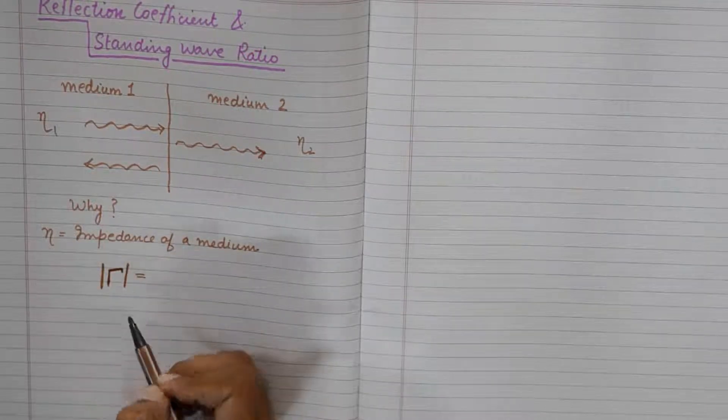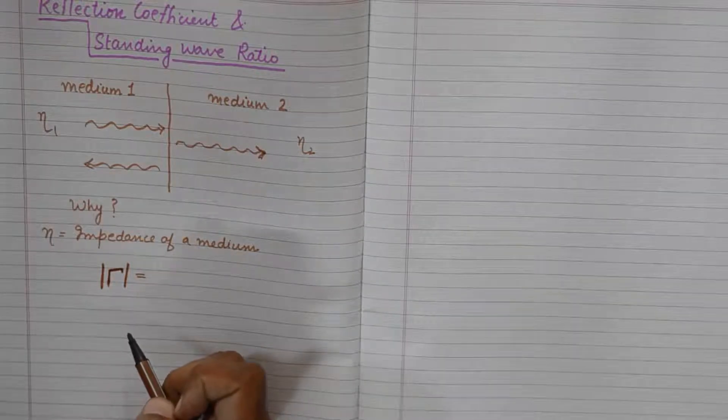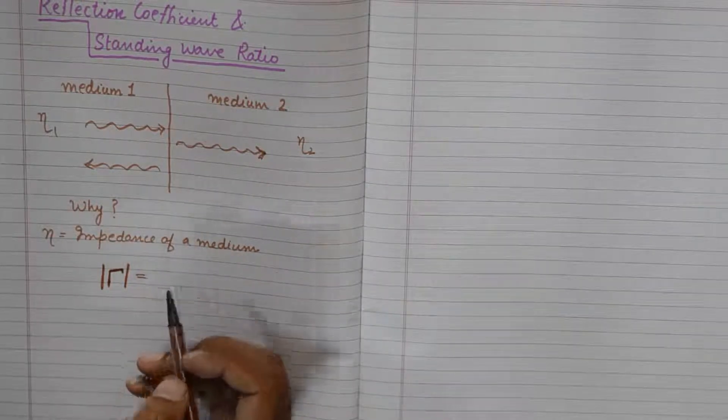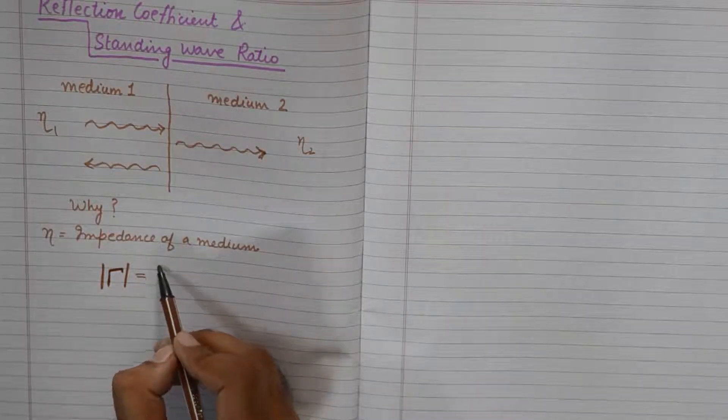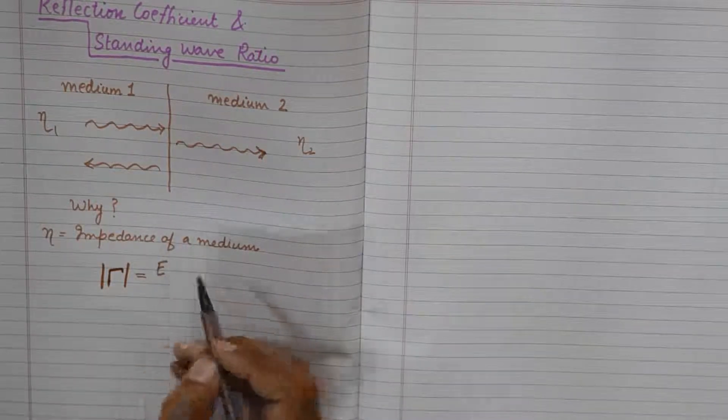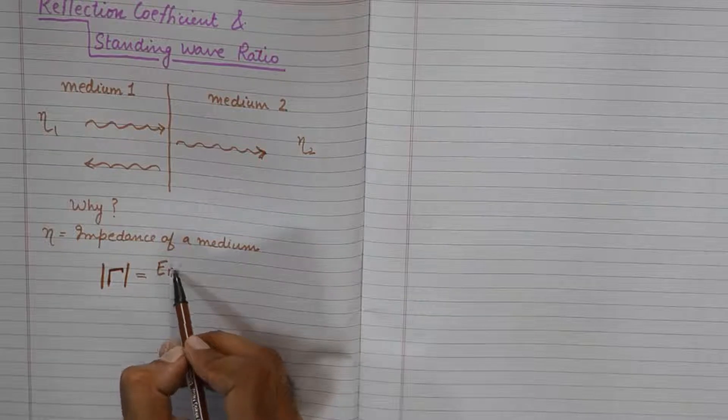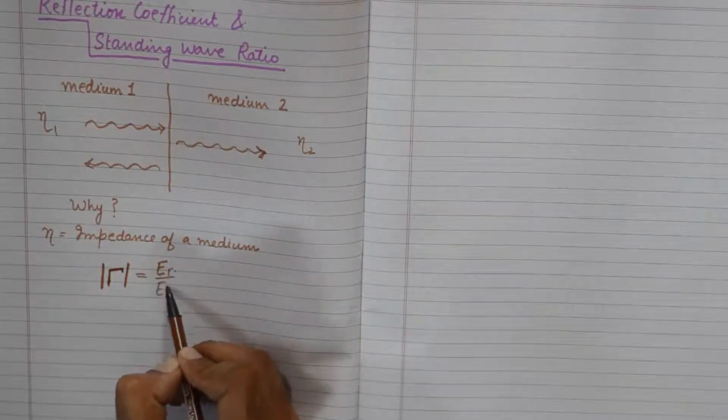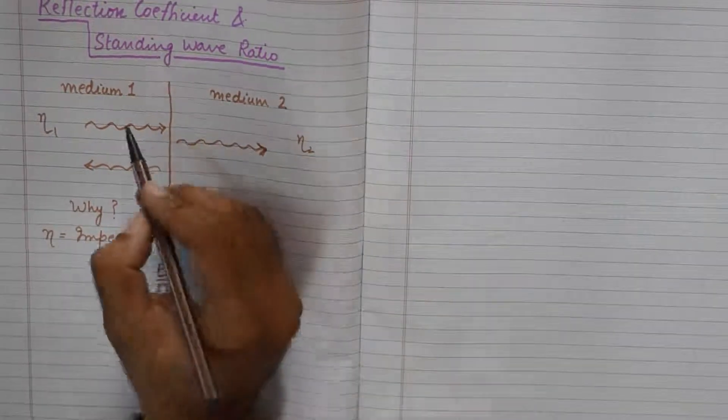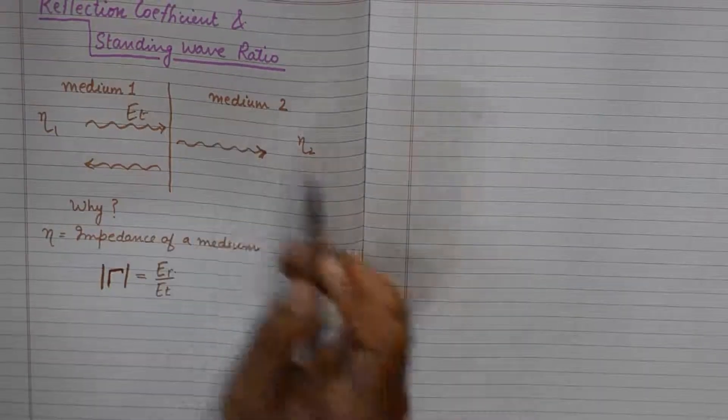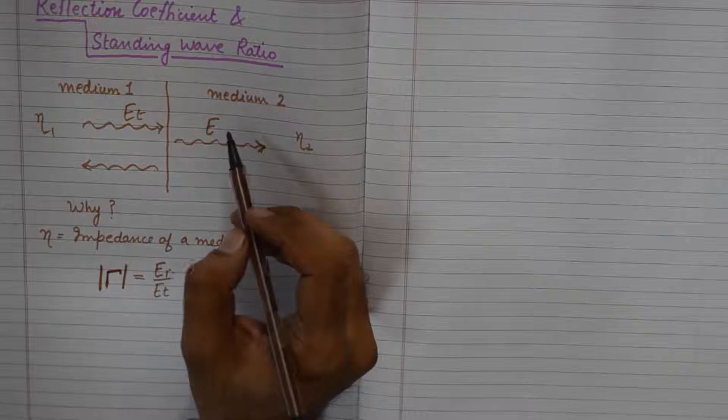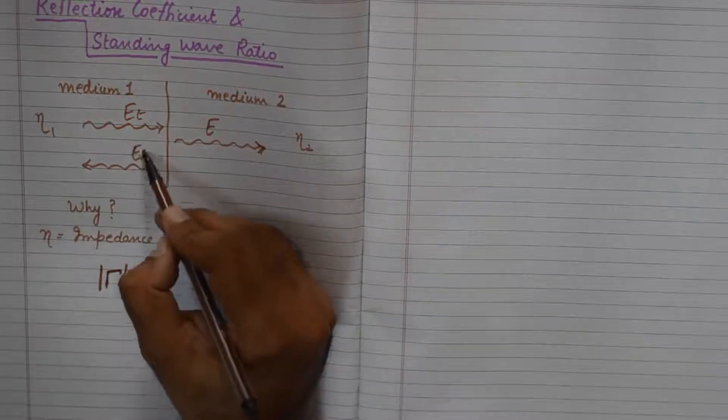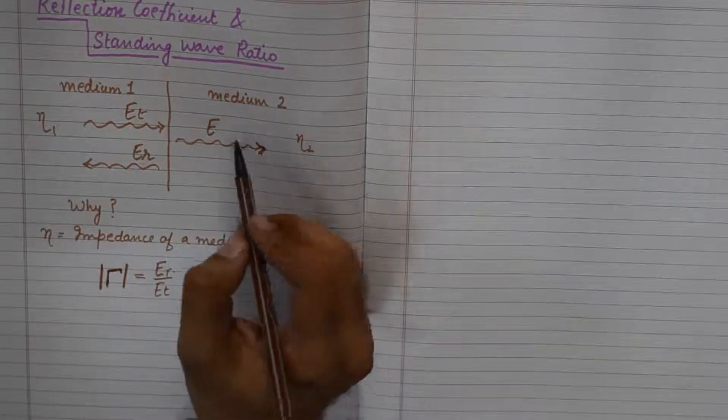And it is denoted by capital Rho, a Greek alphabet. And basically this is the ratio of how much power is reflected back upon how much power was transmitted. For example, ET was transmitted and ER is reflected back.